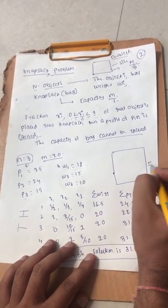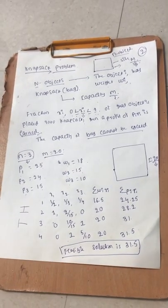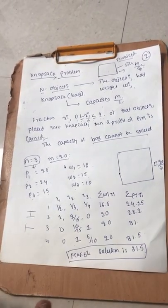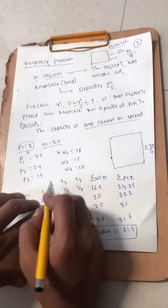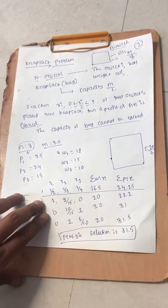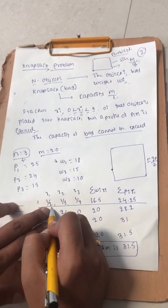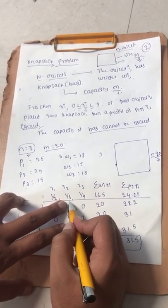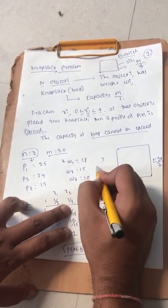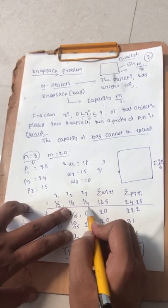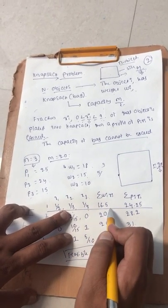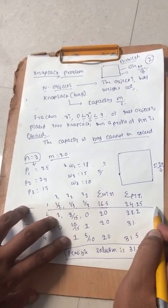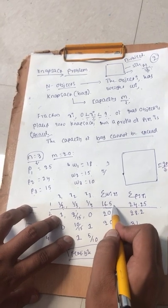The bag capacity is 20 and it should not be exceeded. We are going to make different subsets and among those subsets, whichever has the maximum profit will be selected, as per the greedy method. In the first attempt, I take 50% of object 1's weight (so 9), one third of object 2 (so 5), and one fourth of object 3. The total weight w_i times x_i gives 16.5 and the profit is around 24 to 25, but the bag is not full, so this subset is rejected.